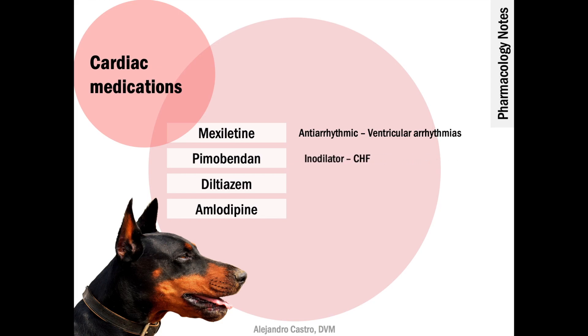Pimobendan is an inodilator with inotropic and vasodilator effects and is used to treat congestive heart failure secondary to DCM.